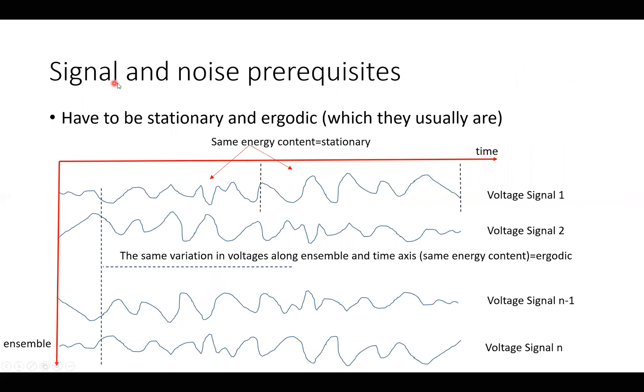We have to have some signal and noise prerequisites. The signals and the noise have to be stationary and ergodic, which they usually are. That they are stationary means that if we take a time slice here and the same time slice here, it contains the same energy on average.